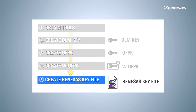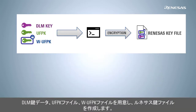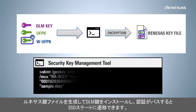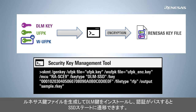Finally, we will create a Renesas key file for secure DLM key installation. Using the Security Key Management tool, provide the DLM key data, the UFPK key file, and the WUFPK key file to create a Renesas key file containing the encrypted DLM key and the WUFPK. This example generates a Renesas key file for a DLM key that will permit regression from the non-secure software development state to the secure software development state. Note that all key data contained in this file is encrypted.